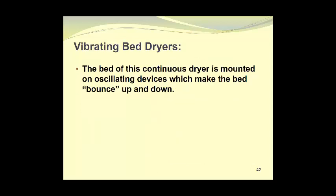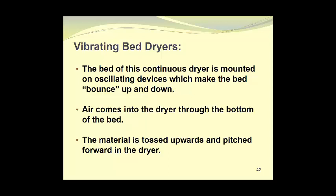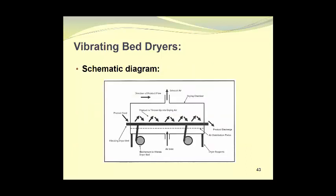In vibrating bed dryers, we have a bed that is mounted on an oscillating device that makes the bed bounce up and down. Air comes into the dryer through the bottom of the bed. The material is tossed upwards and pitched forward in the dryer. It's rather difficult to do a good schematic diagram of this. However, you can see that there is a mechanism to vibrate the drying bed and the air comes up through the bottom and goes upwards through the bed and the product is thrown up into the drying air and moved ahead towards the product discharge. The exhaust air vents through the top of the dryer housing.